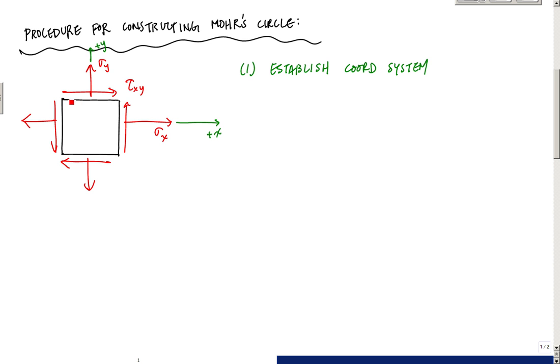I can look at the same thing here, plus y face in the plus y direction - positive times a positive is a positive. Here, it's a negative y face in the negative x direction, negative times a negative is a positive. So according to my coordinate system, this is a positive shear stress condition. So I established this coordinate system.